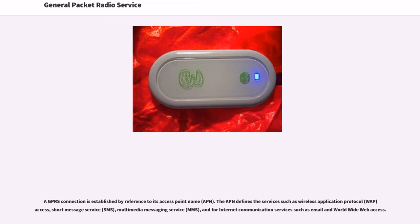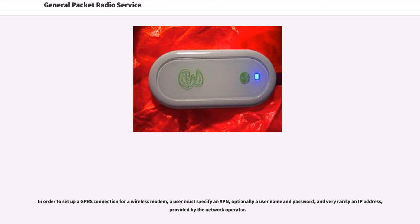A GPRS connection is established by reference to its access point name, APN. The APN defines services such as wireless application protocol (WAP) access, short message service (SMS), multimedia messaging service (MMS), and internet communication services such as email and worldwide web access. To set up a GPRS connection for a wireless modem, a user must specify an APN, optionally a username and password, and very rarely an IP address, provided by the network operator.